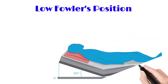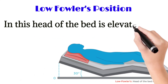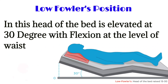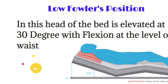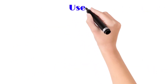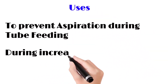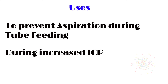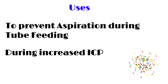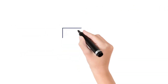Next is the low Fowler's position — the head of the bed is elevated 30 degrees with flexion at the level of the waist. Uses include respiratory distress, to prevent aspiration during tube feeding, and to decrease intracranial pressure when ICP is increased.